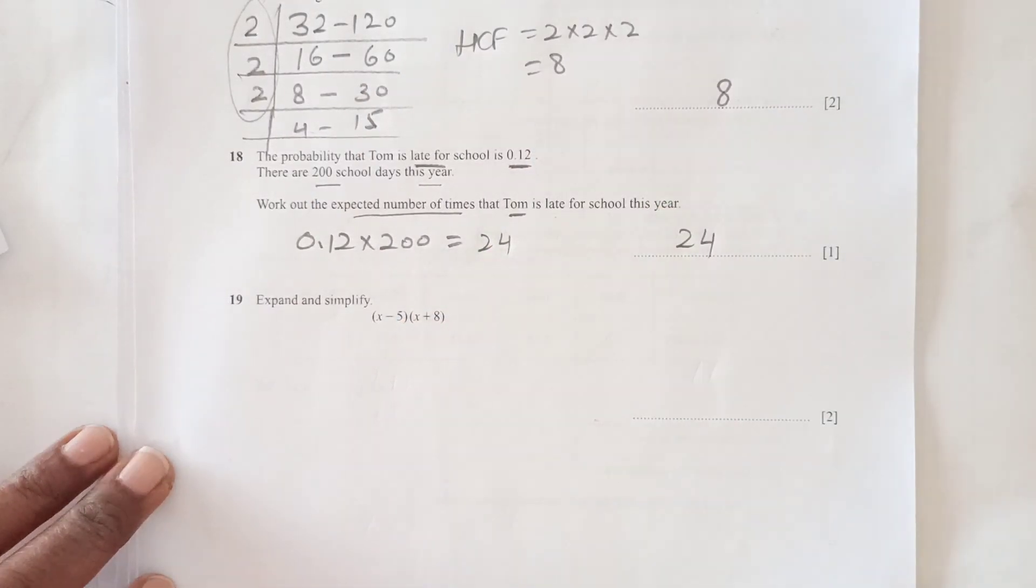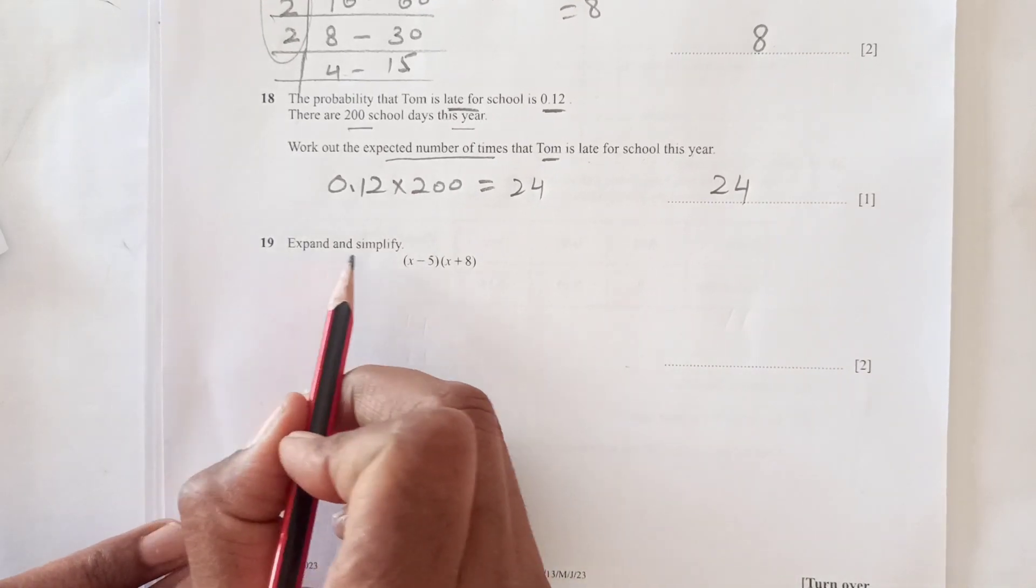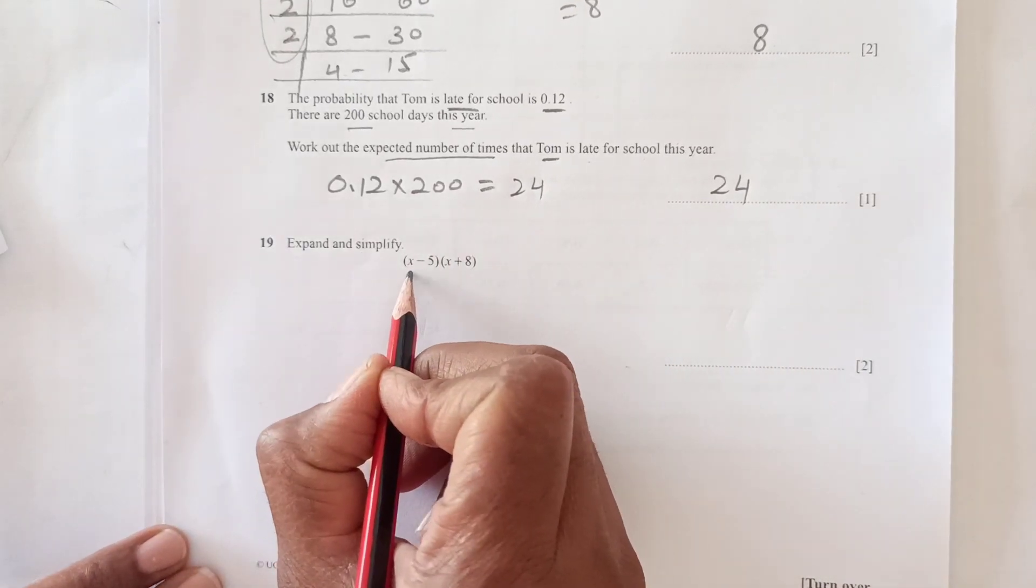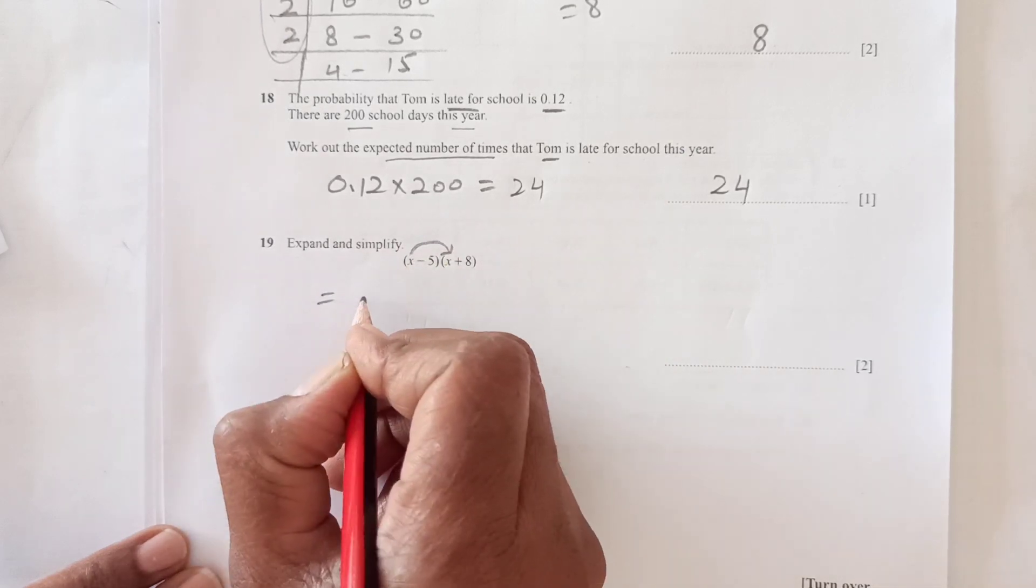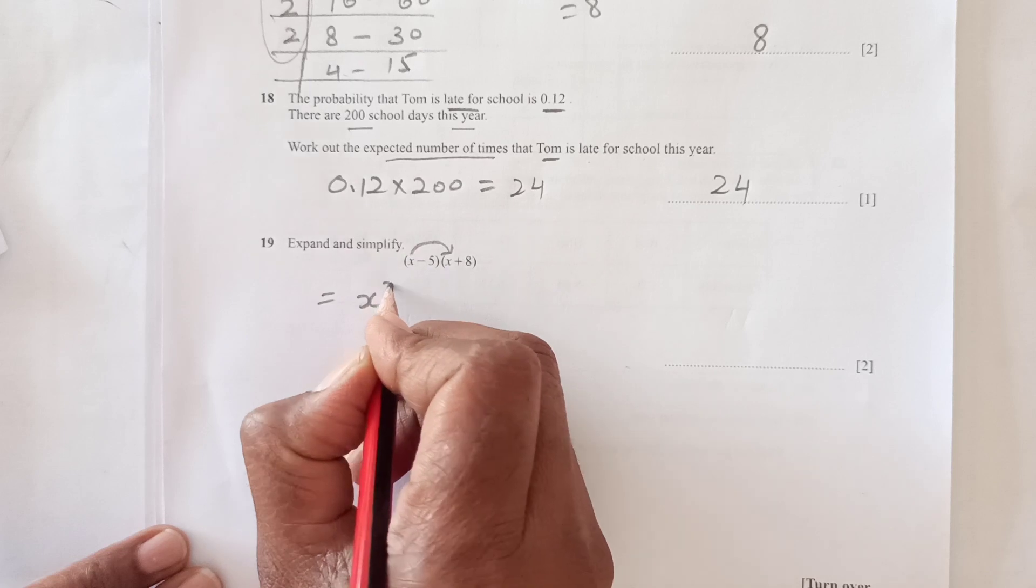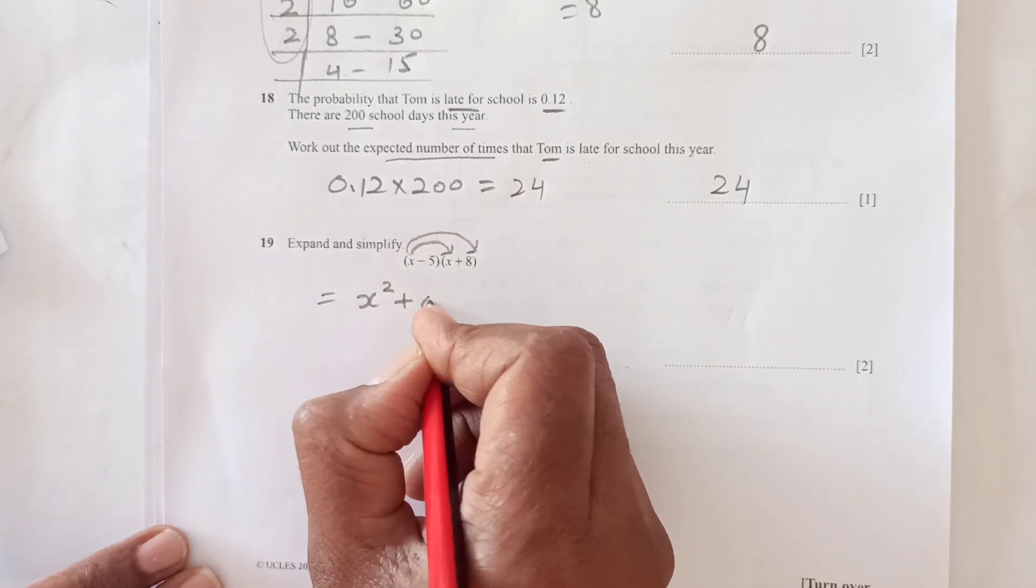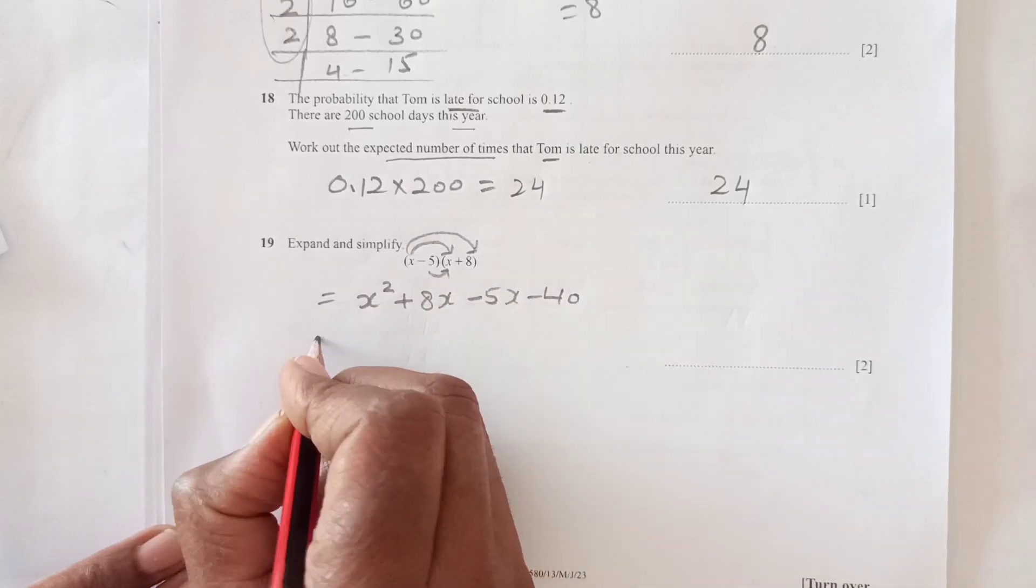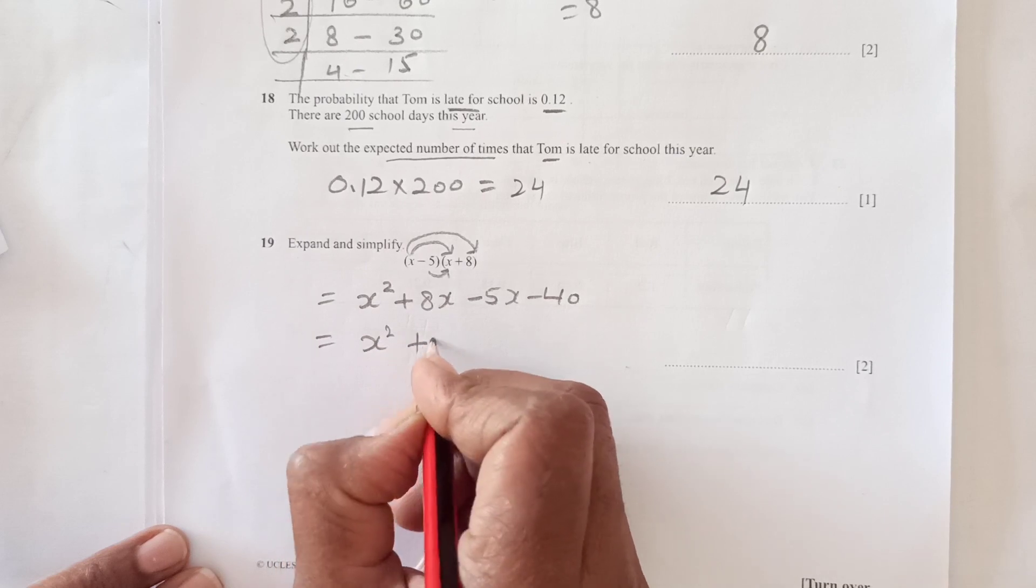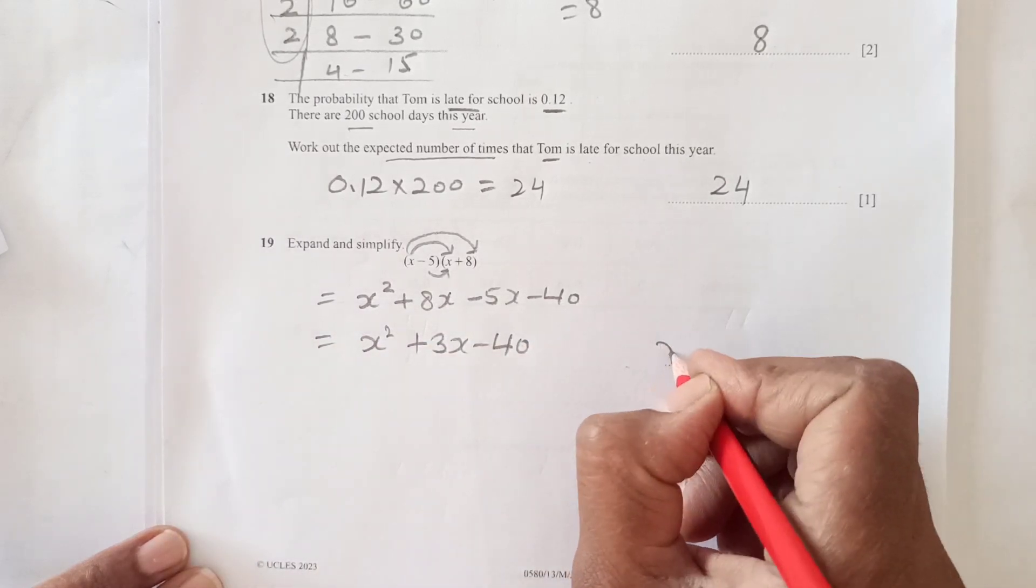Number 19: Expand and simplify (x+8)(x-5). We multiply: x times x is x squared, plus x times 8 is 8x, then minus 5x minus 40. So x squared plus 3x minus 40 is the final answer.